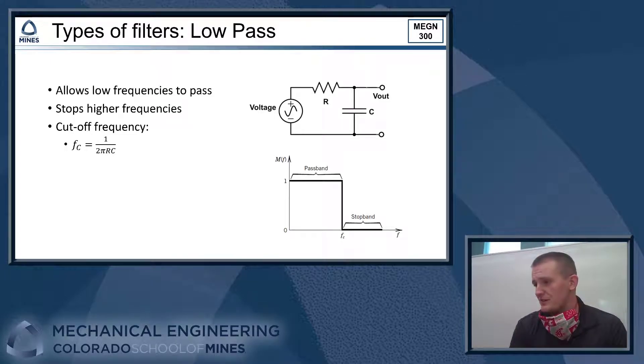So a simple way to do this is with one resistor and one capacitor. You can calculate the cutoff frequency here based off of it's 1 over 2 pi RC. That's an equation that you'll become quite familiar with when you're working with RC filters. We see that a lot for determining the cutoff frequency.